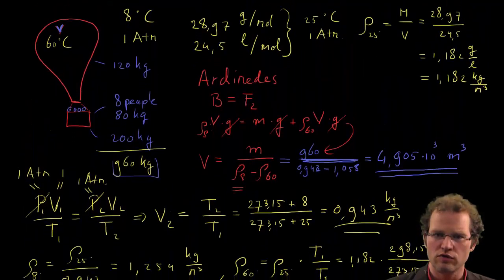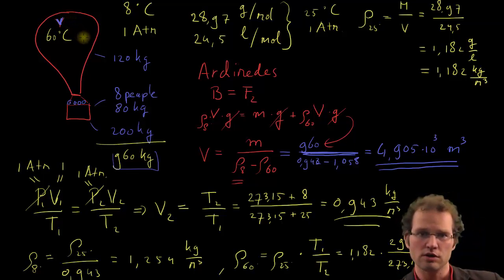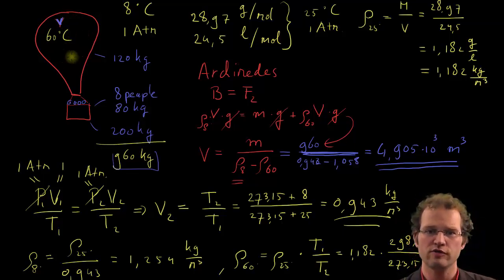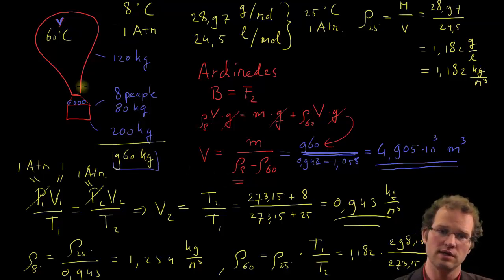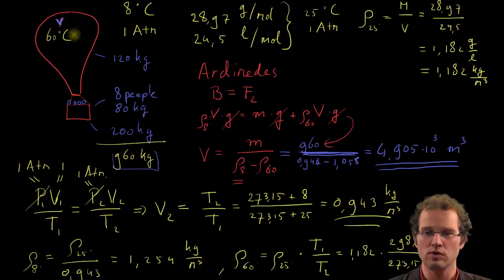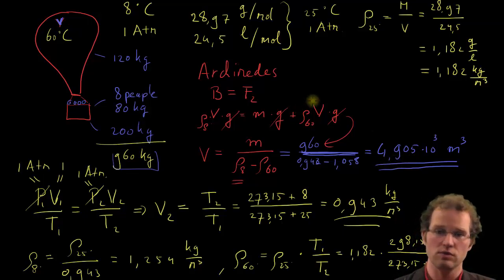And now we solved the whole problem. We wanted to know how much volume would a hot air balloon need to lift off 8 people with a bucket and itself from the ground at an outside temperature of 8 degrees centigrade and inside temperature of 60 degrees centigrade. Well, our answer is, you would need 4,905 cubic meters. And this is the way you do it. Thank you.